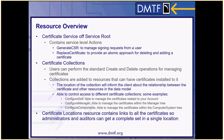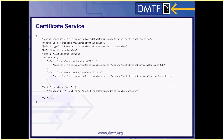The Certificate Locations resource contains links to all the certificates so that administrators and auditors can get a complete set of certificates in a single location. Here is an example Certificate Service resource — it largely contains an actions property with our two standard actions, Generate CSR and Replace Certificate, and also our Certificate Locations property pointing to the certificate locations resource.